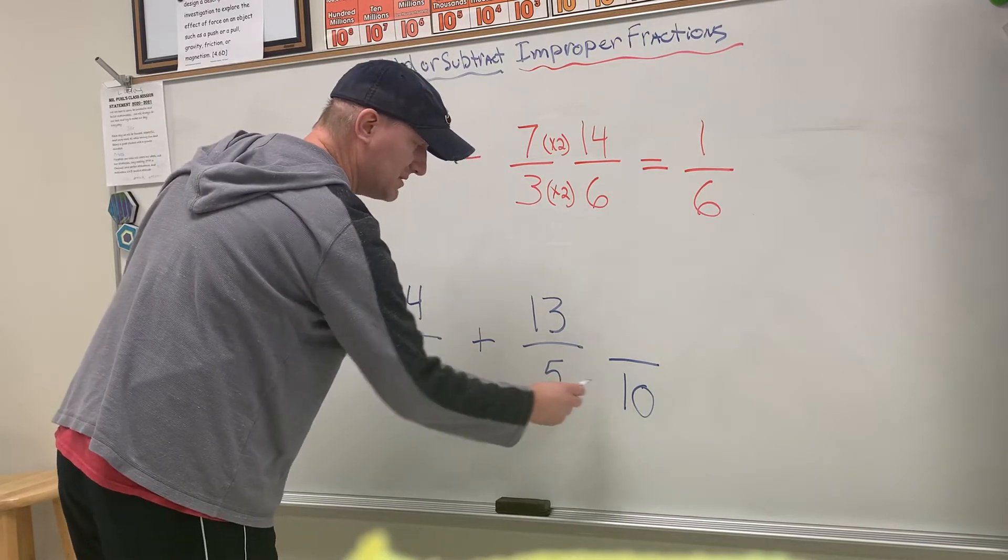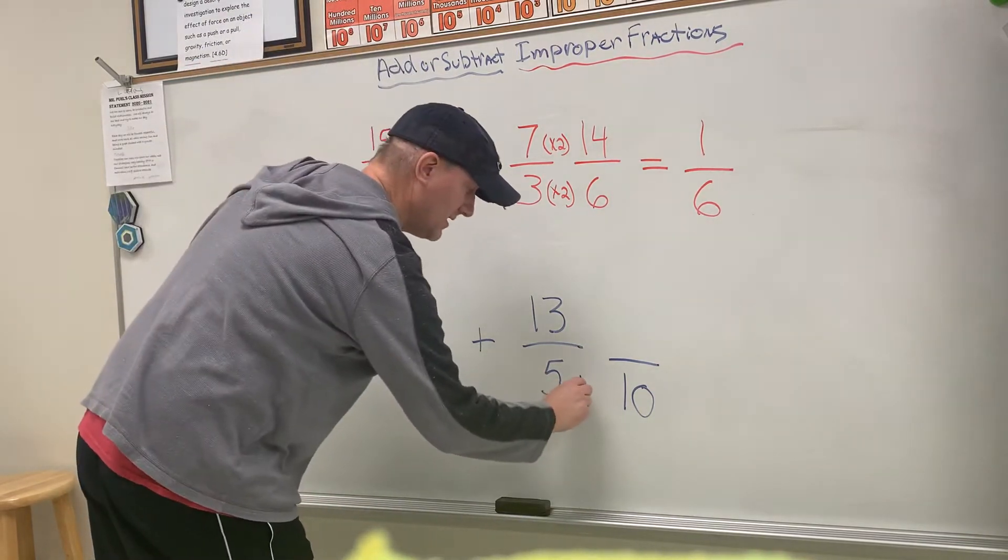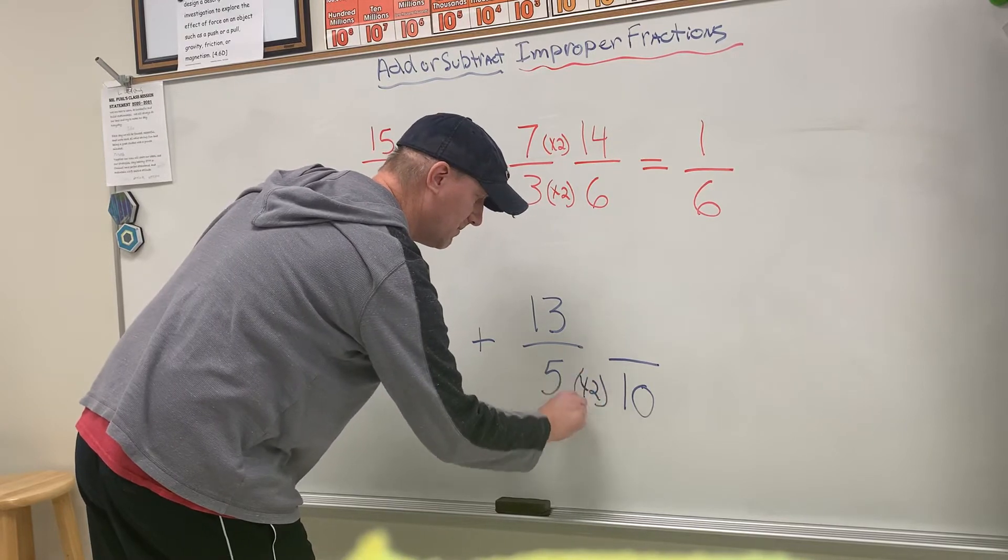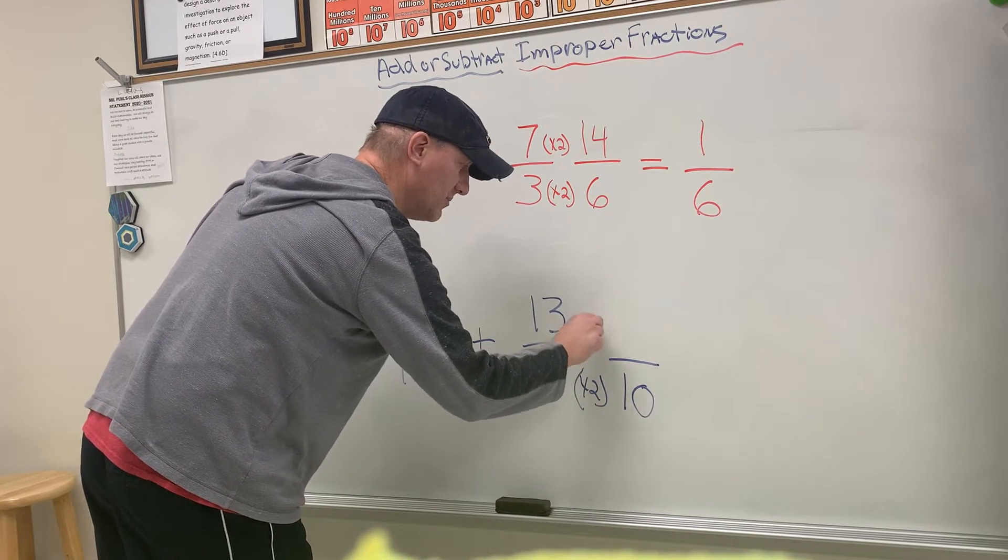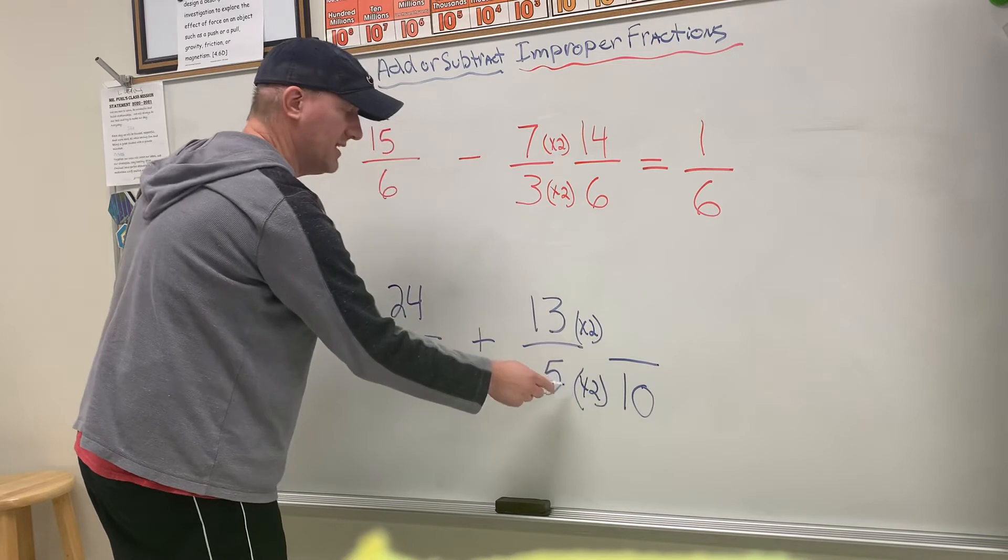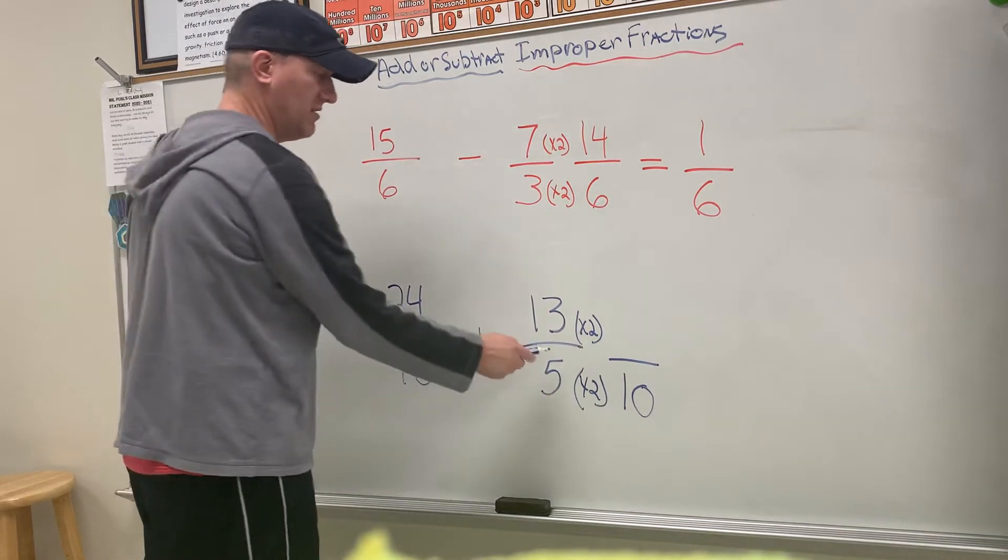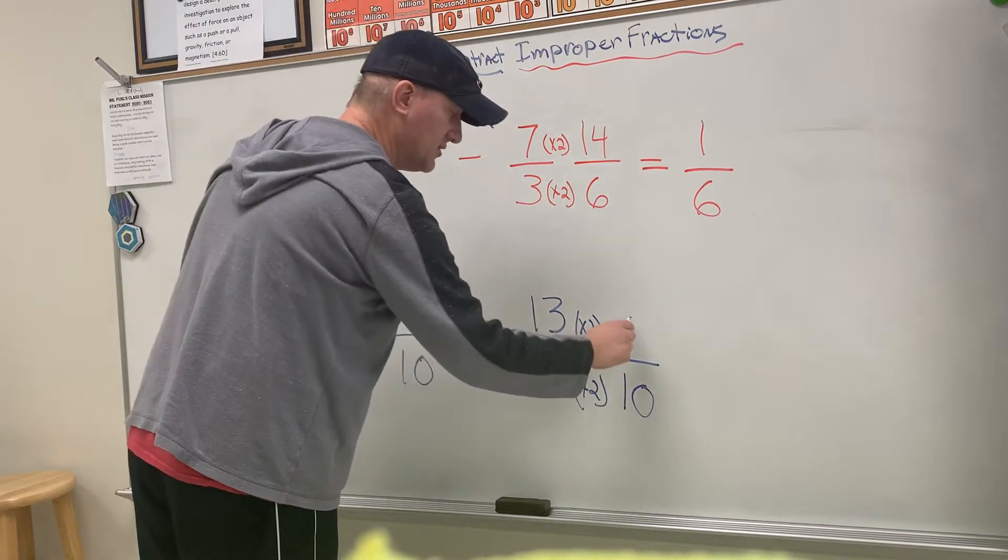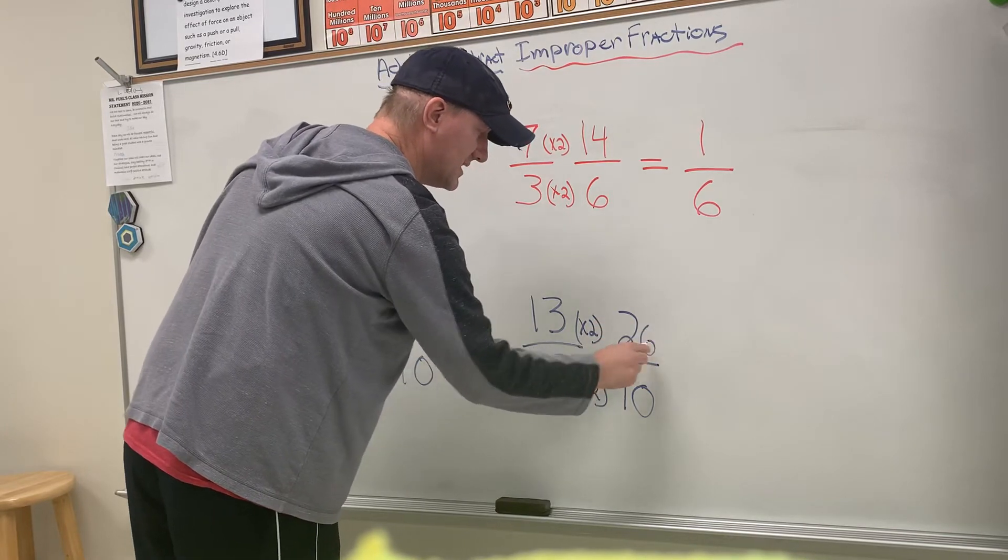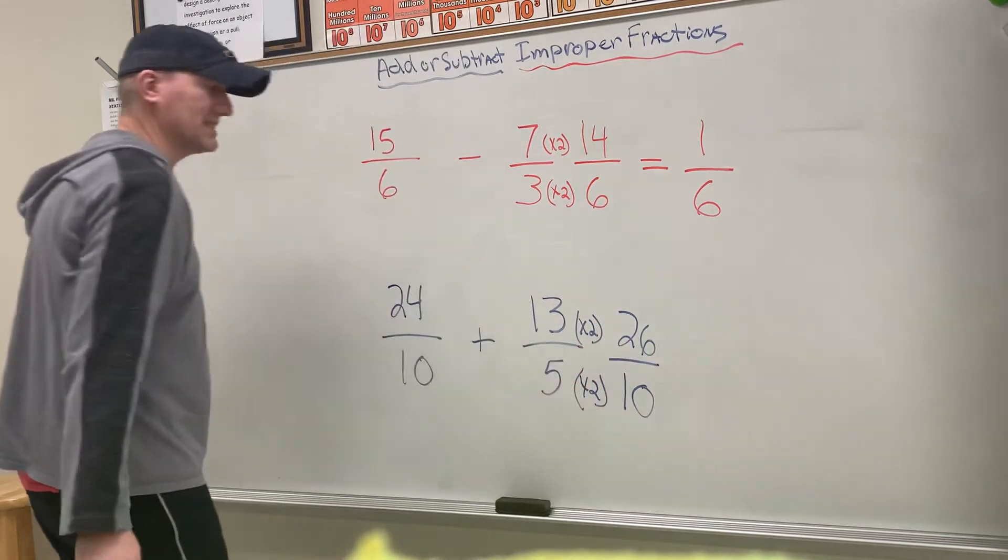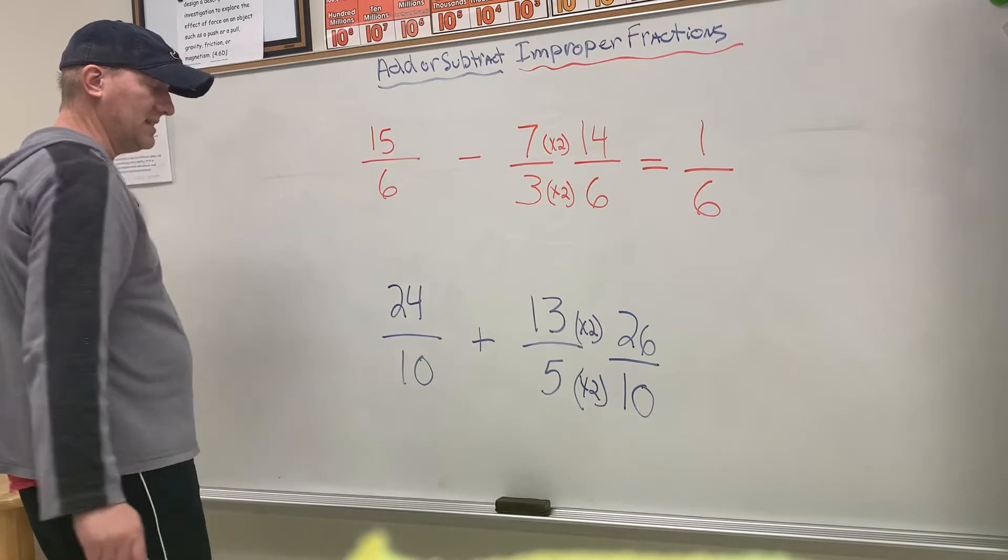Two. Again, whatever you do to the denominator, you have to do to the numerator. So 13 times 2 is 26. I have 26/10 and I'm adding that to 24/10.